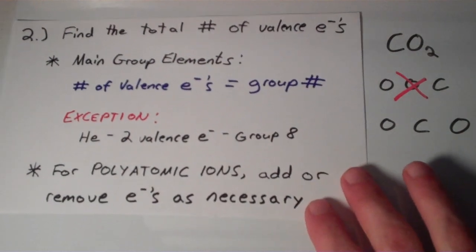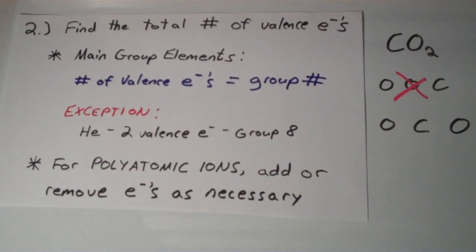And also, when you're working with a total number of valence electrons, any time you have a polyatomic ion, you need to add or remove electrons as necessary. So for each positive charge, you would remove an electron, and for each negative charge, you would add an electron. That doesn't apply here because we have just a molecule. It's not a polyatomic ion.